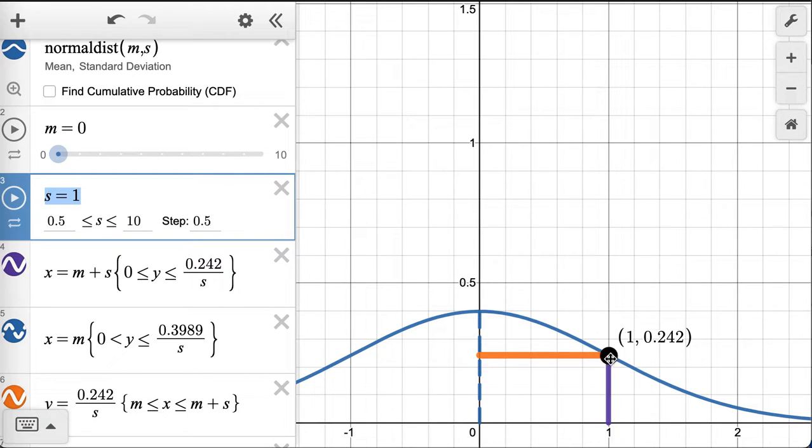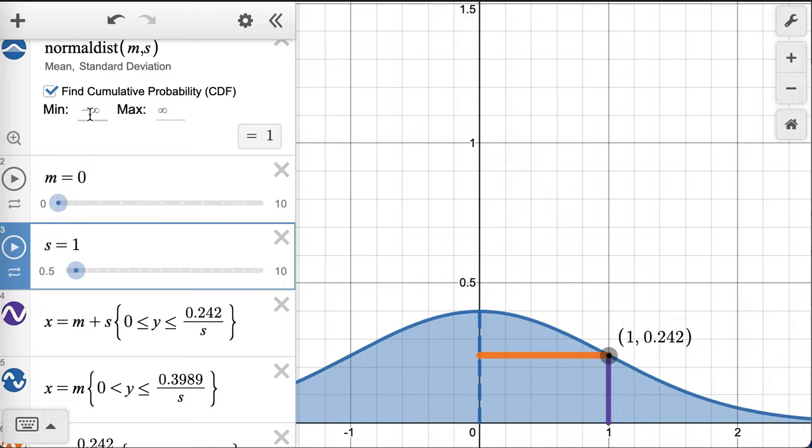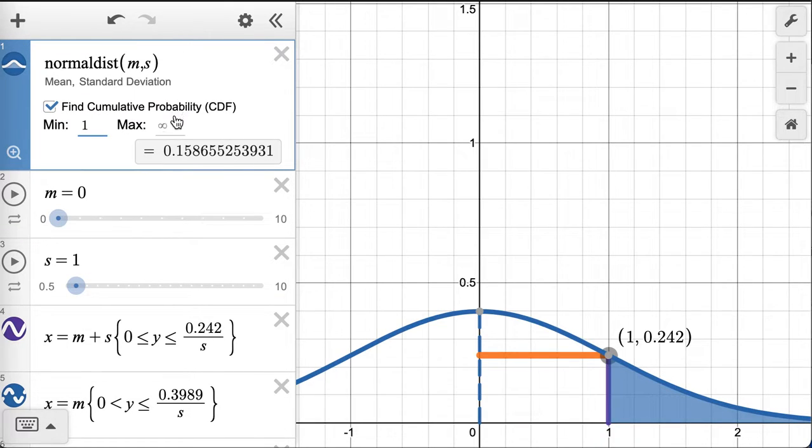So this has a standard deviation equal to 1. This is what we call the standard normal curve. And the area and probability between 0 and 1 is 34%.